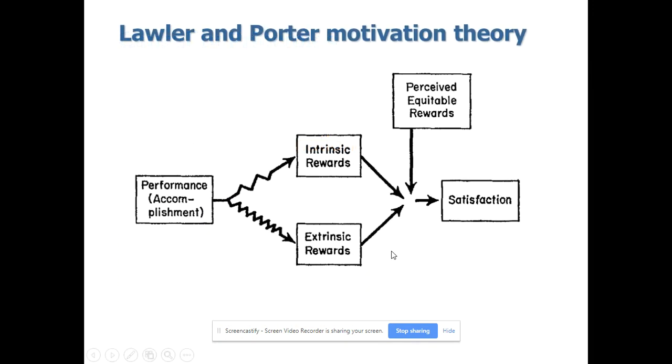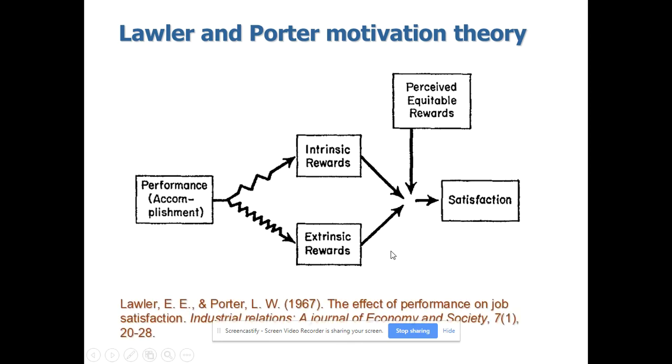One example to understand theory. This particular theory is coming from this particular citation. This is one of the well-established motivation theory in the literature, especially in the motivation domain. Here the theoretical understanding is performance is affecting employee satisfaction through intrinsic rewards and extrinsic rewards. Also, this particular relationship is moderated by perceived equitable rewards.